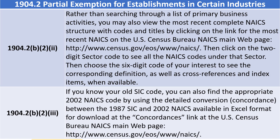Choose the one that most closely corresponds to your primary business activity, or refine your search to obtain other choices. Rather than searching through a list of primary business activities, you may also view the most recent complete NAICS structure with codes and titles by clicking on the link for the most recent NAICS on the U.S. Census Bureau NAICS main webpage.